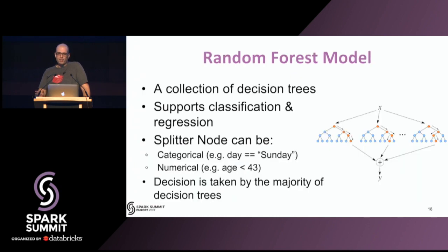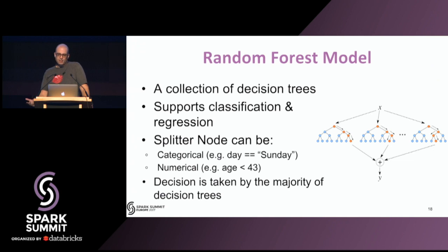A quick recap on Random Forest for this room. Random Forest is a collection of decision trees that can give us classification and regression. In each tree, we have splitter nodes that help make a classification decision — categorical or numerical — based on input features. Then we do majority voting between the decision trees. The hard part is training them, building all the trees, and selecting features — but once you have the tree, evaluation is pretty basic.